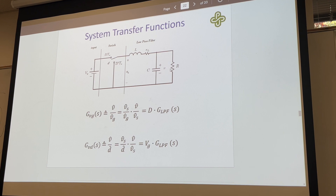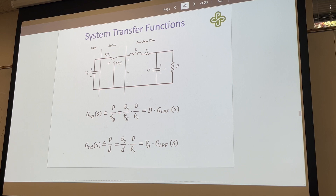Variations in the output related to a variation in the input. And we do the same thing for GVD — variations in the duty cycle to variations in the output — the duty cycle changes to output transfer function, which will be our steady state input voltage times the gain of that low-pass filter.